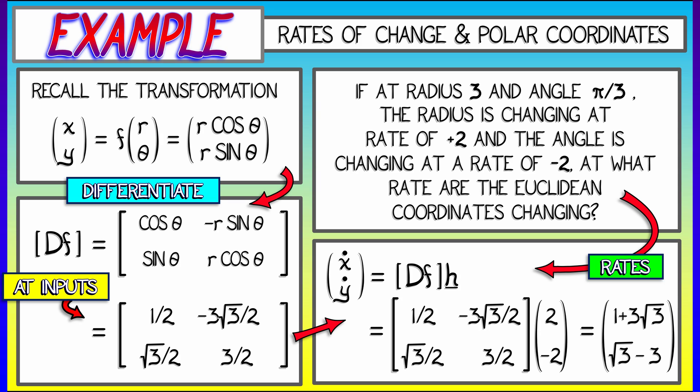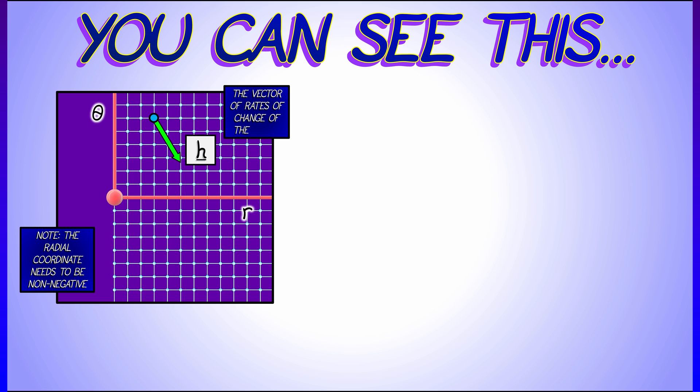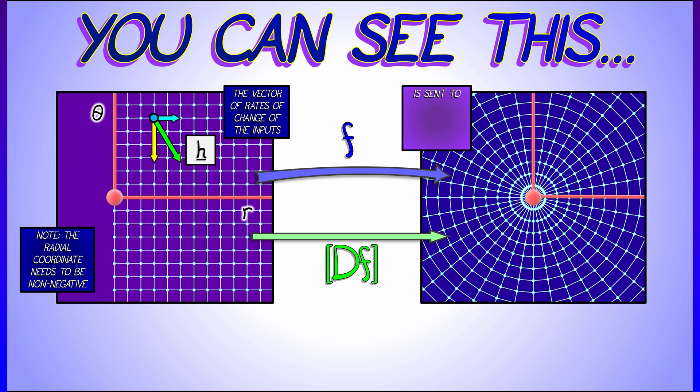Okay, that's the algebraic solution, but can we see this geometrically? Can we draw pictures of what is happening? Start by drawing a picture of the r theta plane, or rather half plane, since r needs to be positive. Consider the point at which we are at, and look at the vector of rates of change of outputs obtained by adding together the r dot and the theta dot, those basis vectors.